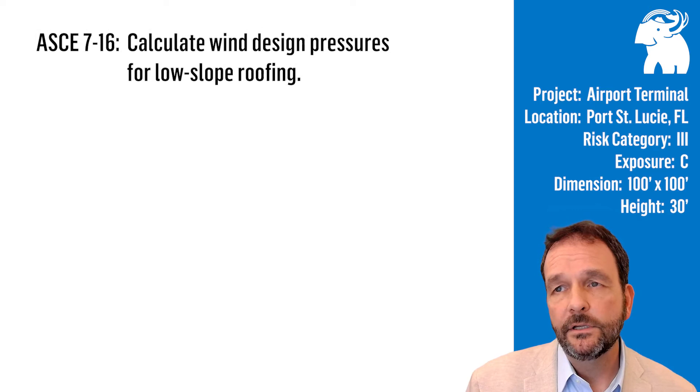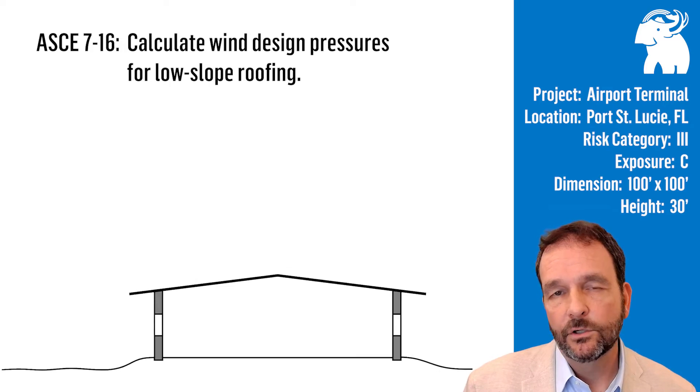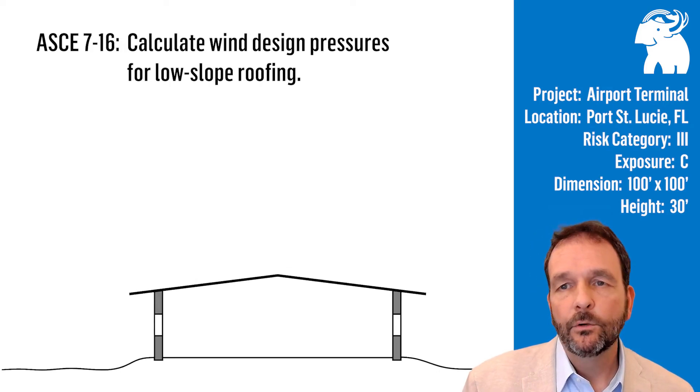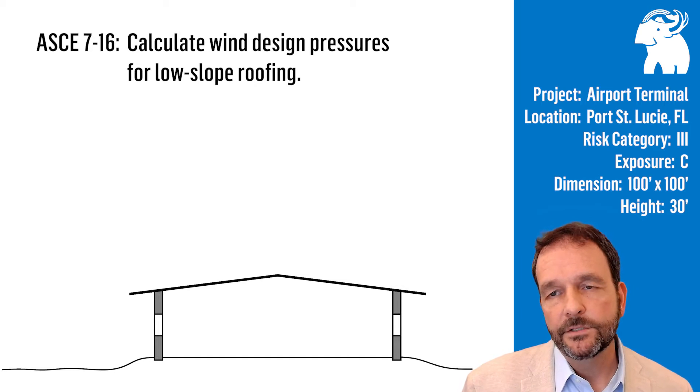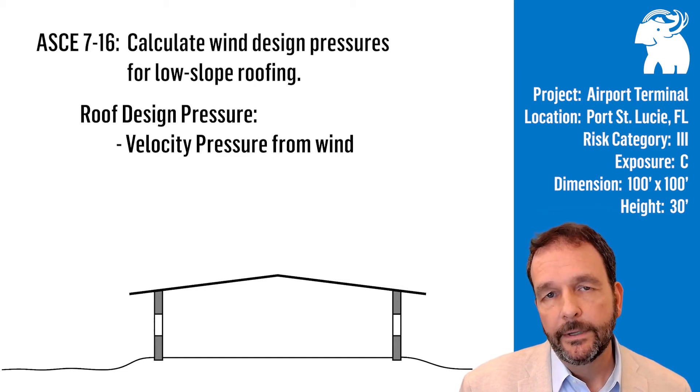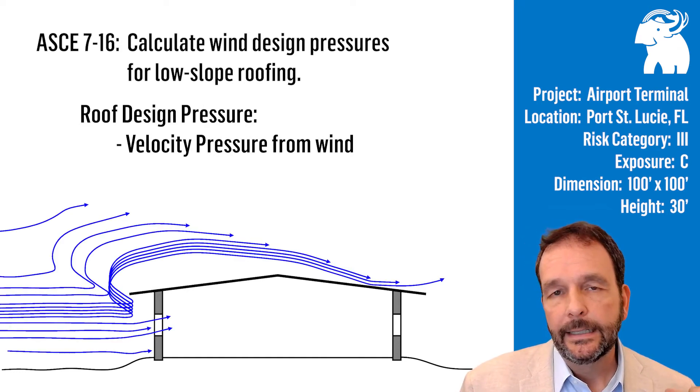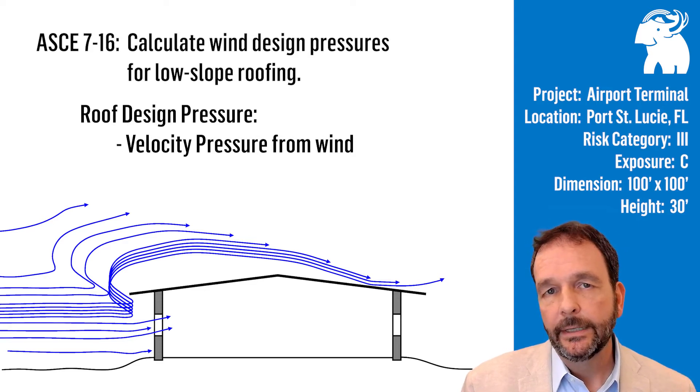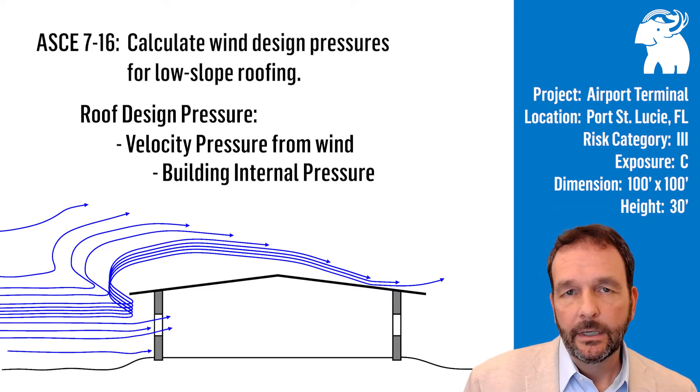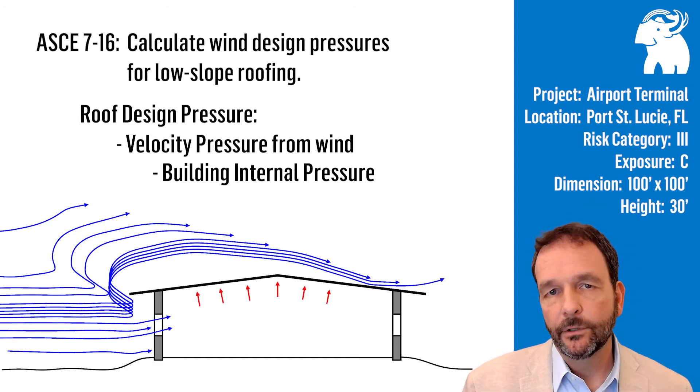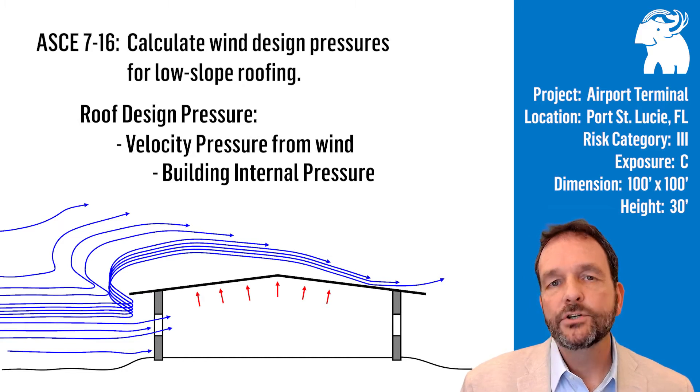Let's review ASCE 7 a bit here, some preliminary review, before we calculate the low-slope roofing design pressure. Low-slope roofing design pressure is based on two different components. You've got the velocity pressure from wind that blows across the terrain and strikes the building. One is the internal pressure component, the pressure that enters the building enclosure through cracks, crevices, and things like that, and will pressurize the interior of the building under positive pressure.